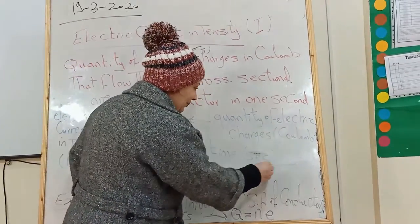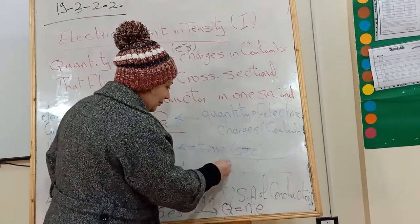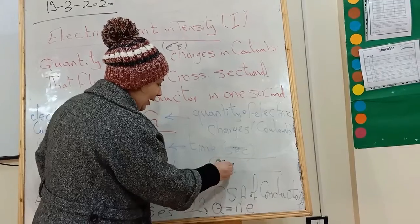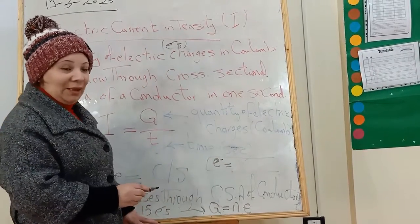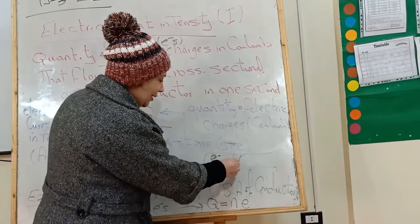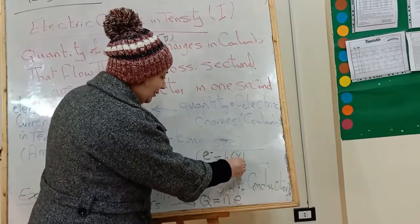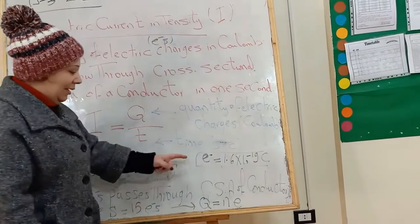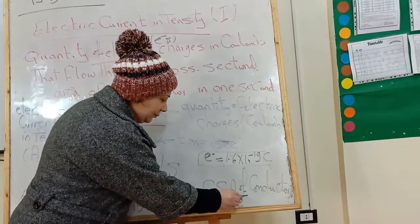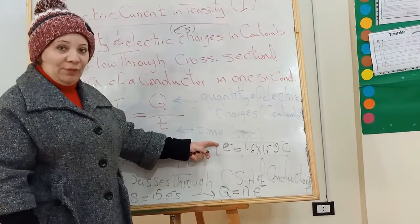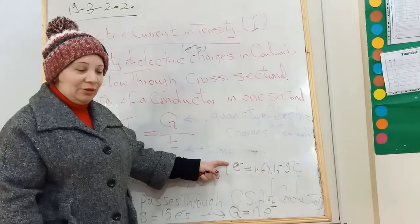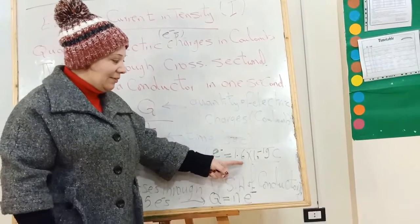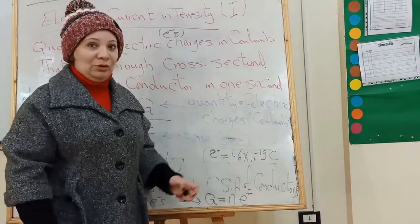Q equals N times E. The charge of one electron has a value of 1.6 times 10 to the power of negative 19 coulombs.